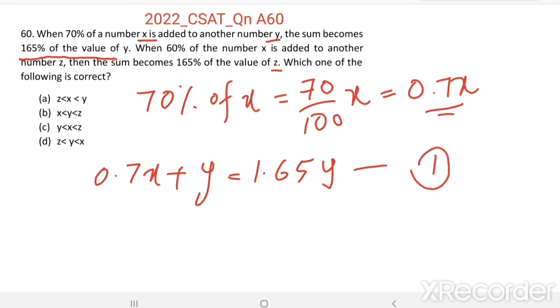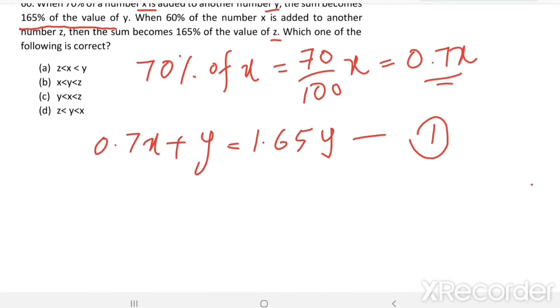Now see the second statement. When 60% of the number x is added to another number z, 60% of x is added to another number z, the sum equals 1.65z. This is equation 2.